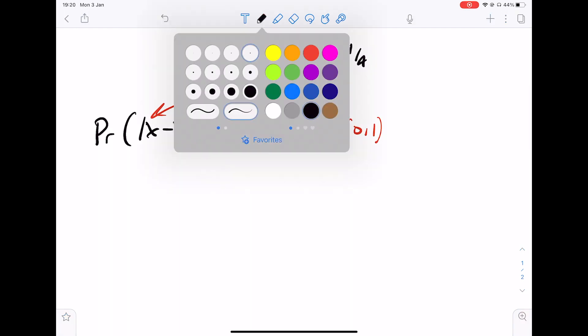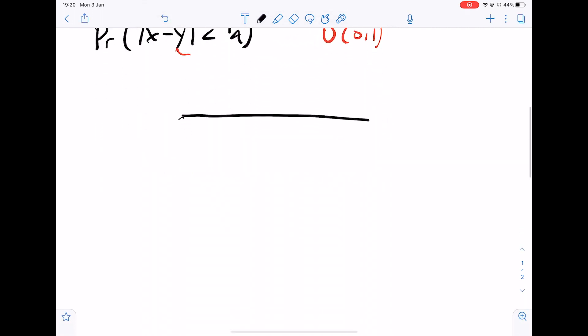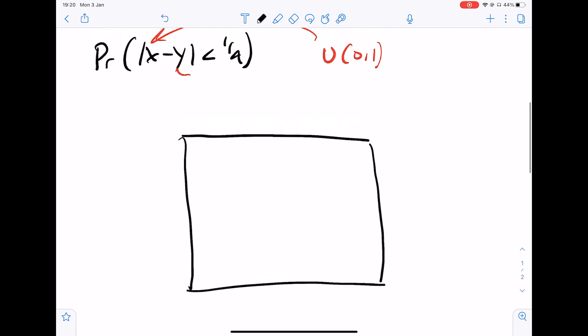Now you might think we have to integrate here but we actually want to use the unit square. The unit square is really good for these sort of questions for probability because they eliminate the need for integration.